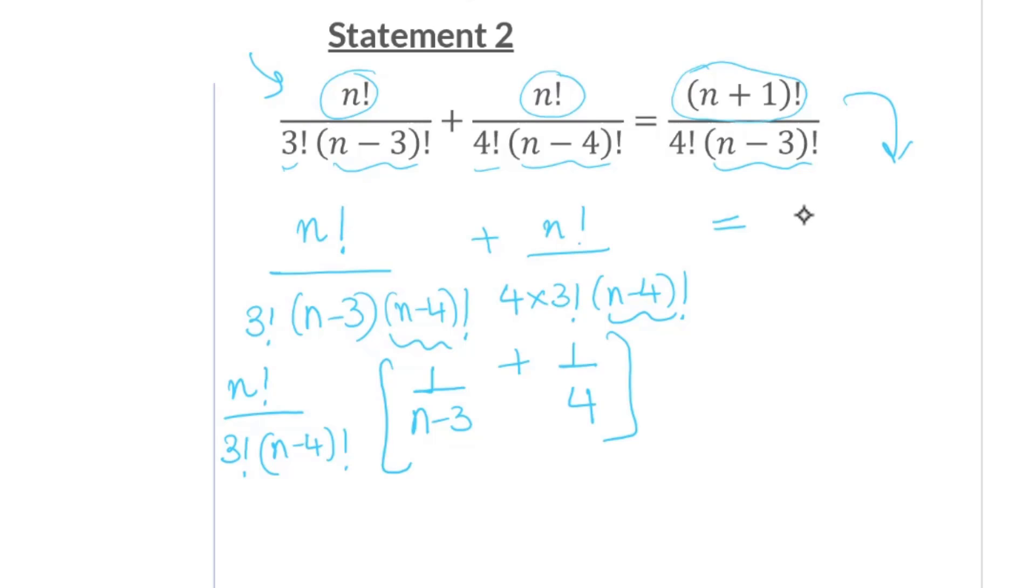Now, let's start doing the right hand side. Right hand side, you have N plus 1. So you can write this as N plus 1 factorial can be written as N plus 1 into N factorial, 4 times 3 factorial into N minus 3 into N minus 4 factorial. You get N factorial into N plus 1 over 3 factorial into 4. Now, I start to cancel terms out. N factorial gets canceled out here. 3 factorial gets canceled out here. N minus 4 factorial gets canceled out.